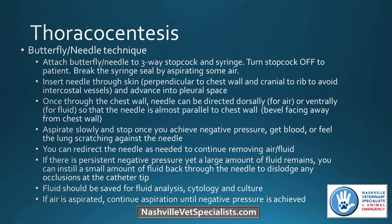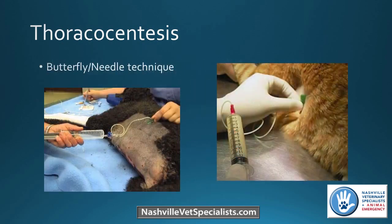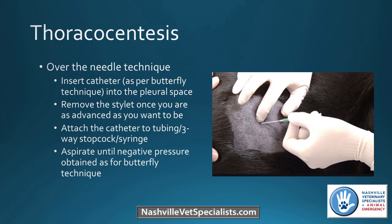Once you get your sample, save some back for fluid analysis, cytology, or culture. If getting air, continue aspiration until you get negative pressure. These pictures show the butterfly technique — one dog in lateral recumbency getting air off, another getting fluid — typically cats or small dogs. For the over-the-needle technique, the same principles apply: bevel up, cranial to the rib. Once in the pleural space, remove the stylet and advance the catheter off it, just like placing an IV catheter. This is less traumatic if the lung hits a catheter tip rather than a needle.